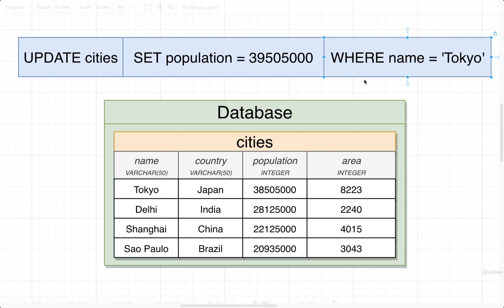In this case we're going to say: find all the records where name equals Tokyo. In our case we've only got one row inside of here with the name of Tokyo, so we're going to find that one row and update its population to 39 million. Let's go ahead and test this out.